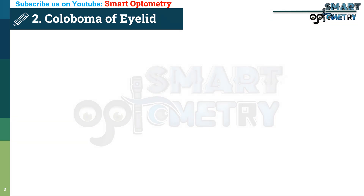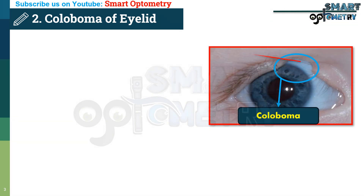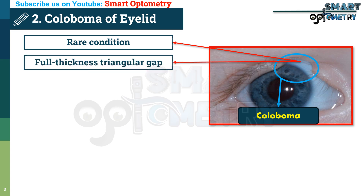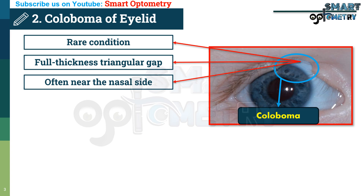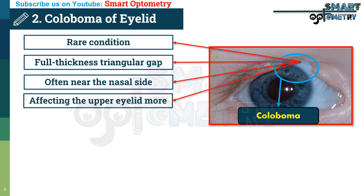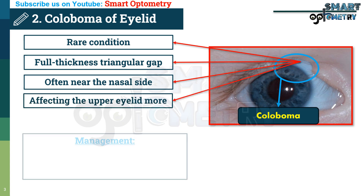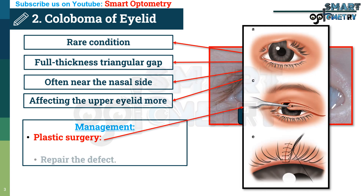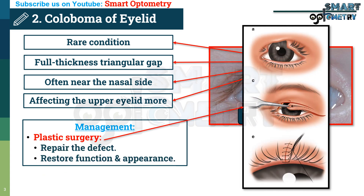Now, congenital coloboma. Congenital coloboma is a rare condition that creates a full-thickness triangular gap in the tissues of the eyelid, often near the nasal side and affecting the upper eyelid more frequently. The primary treatment for this condition is plastic surgery to repair the defect and restore the eyelid's function and appearance.